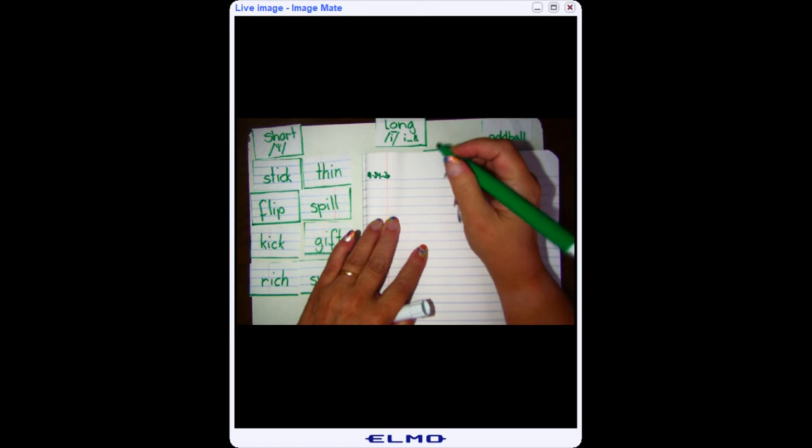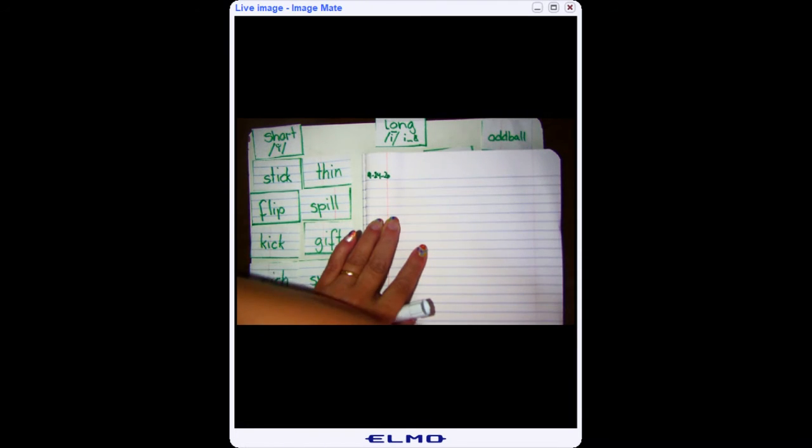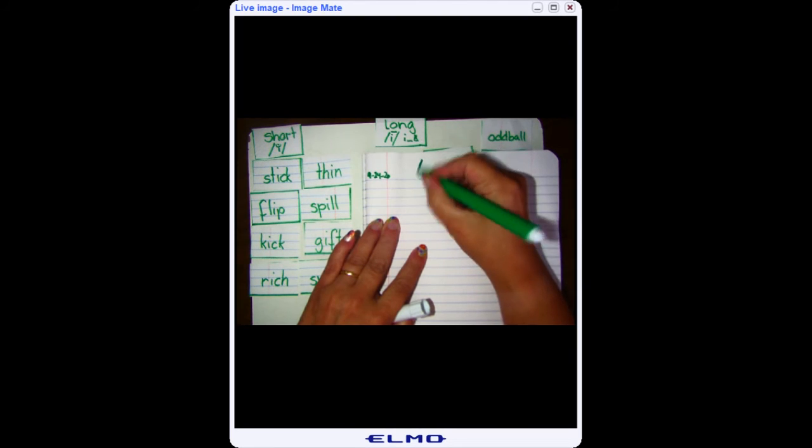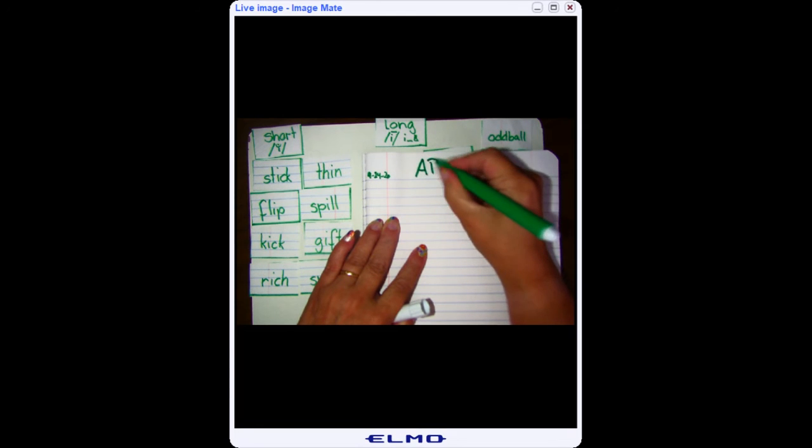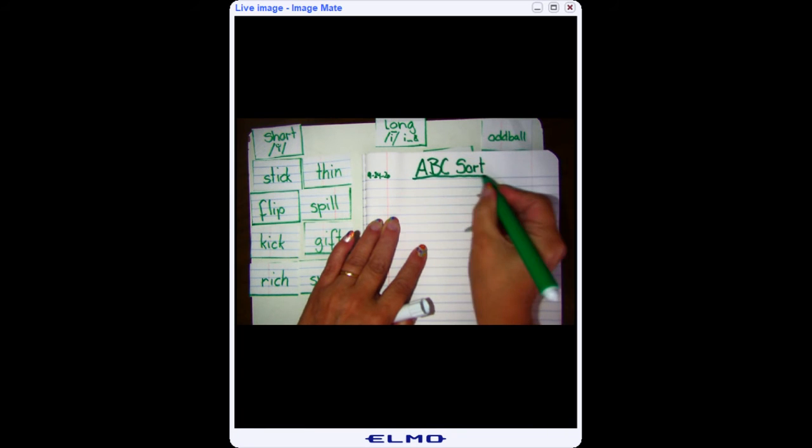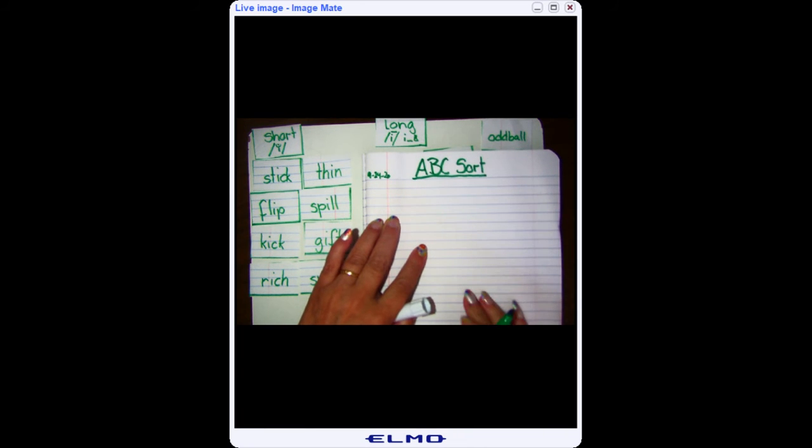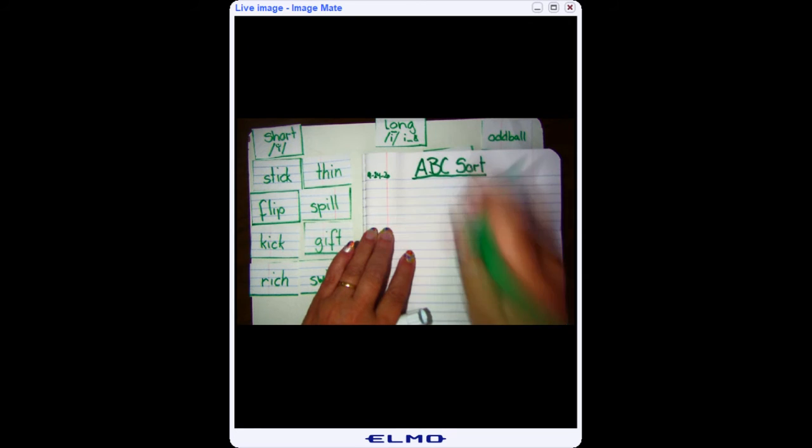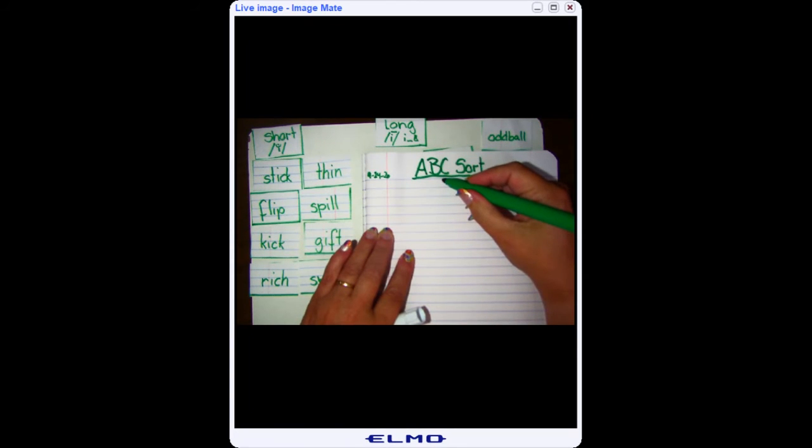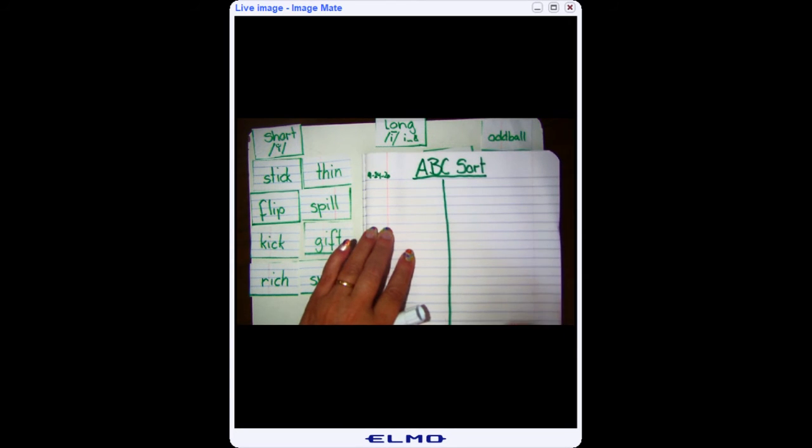Today we are doing an ABC sort. So my title is ABC sort. I'm going to underline that because that's my title and I capitalized my words. Now that I did that I need to write down I have three columns so I need to put my page in three sections.